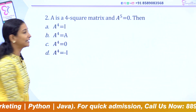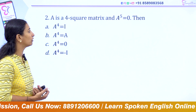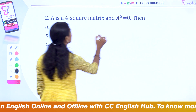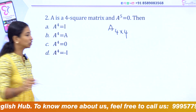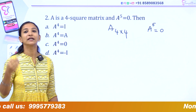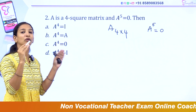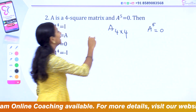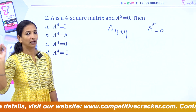The next question is a simple and repeated question. If A is a 4×4 square matrix and A raised to 5 equals 0, then with this condition A⁵ = 0, A multiplied 5 times equals 0. So, A raised to 4 equals 0. What is A⁵ = 0? That means A × A × A × A × A — multiply this.